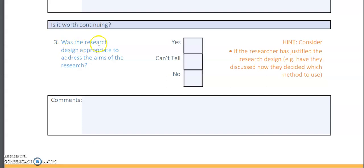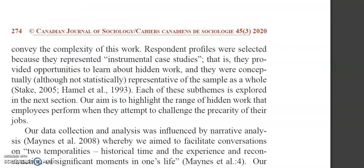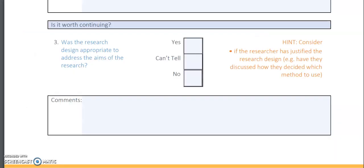The third checklist item asks: was the research design appropriate to address the aim of the study? This includes whether the researchers justified their research design and discussed how they decided which method to use. When I went through the paper, the research design itself is appropriate, but they did not specifically state why they chose that particular design, which is a critique point.